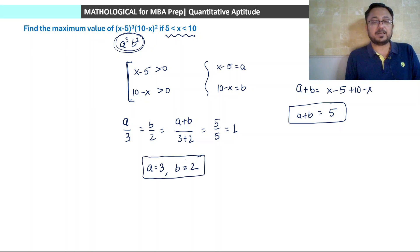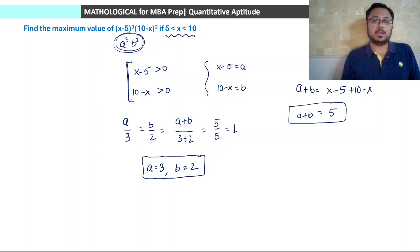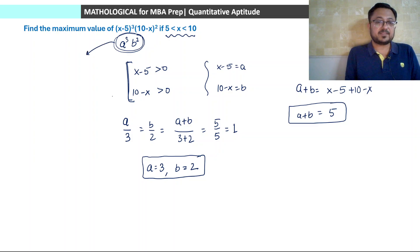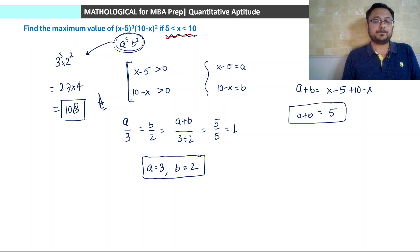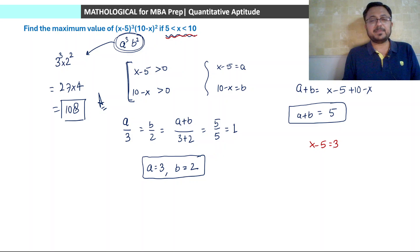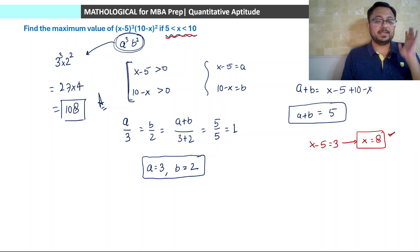Since a equals 3 and b equals 2, the maximum value of a³ into b² equals 3³ into 2² equals 27 into 4 equals 108. We also verify: a equals x minus 5 equals 3 gives x equals 8, and 8 is indeed between 5 and 10. So the maximum value of (x minus 5)³ into (10 minus x)² is 108.